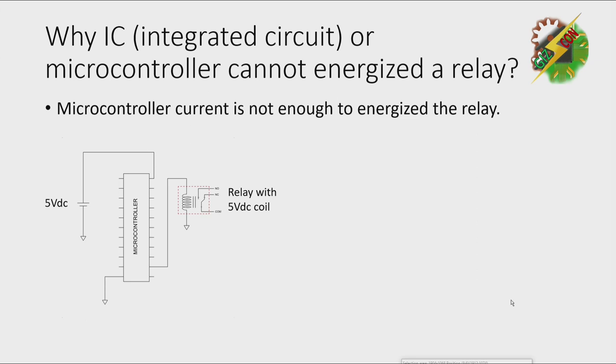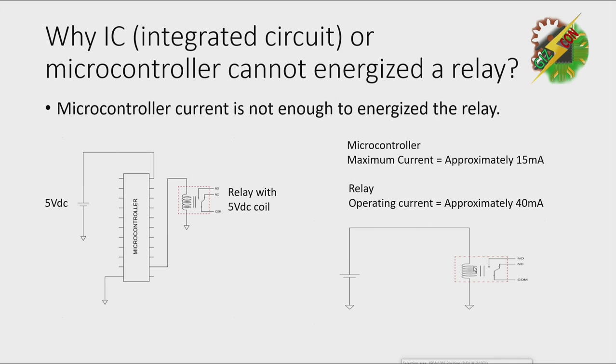For example, we have a 5-volt supply and a microcontroller here, and we have a 5-volt coil relay. A microcontroller's maximum current is approximately 50 milliampere, and the relay operating current is approximately 40 milliampere.